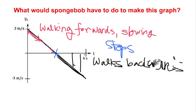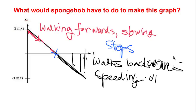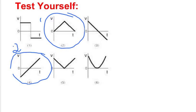I've circled two more graphs, and I want you to sketch those in your notebook. Don't worry about numbers, but do label the axis — velocity and time — and I want you to tell me what Spongebob, or anyone, would have to do to make that velocity-time graph. Write that in your notebook, write your prediction, and then unpause the video.